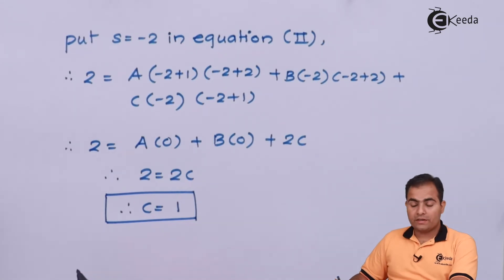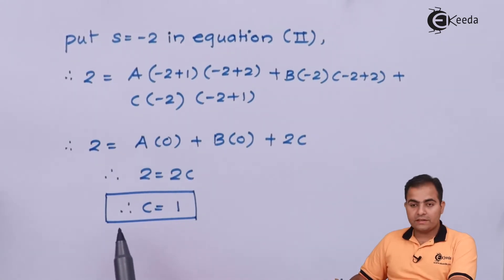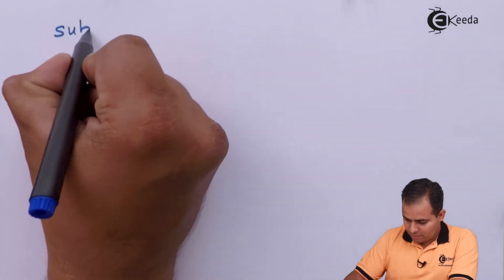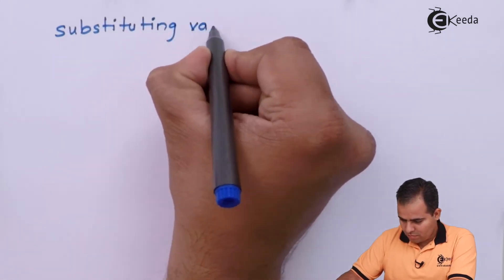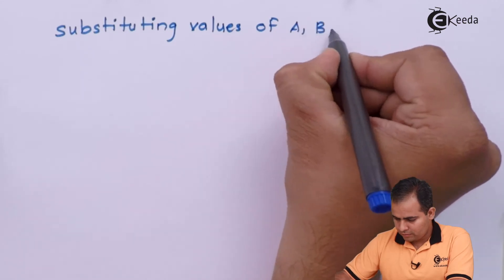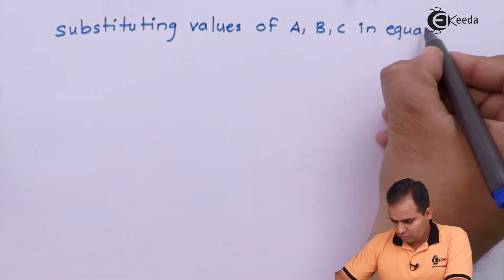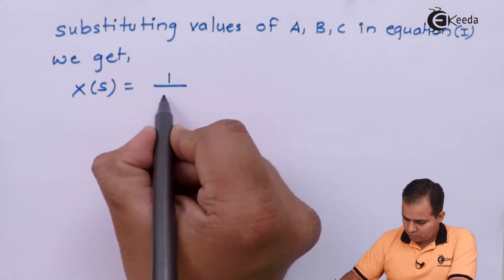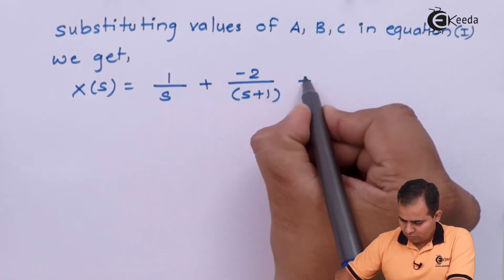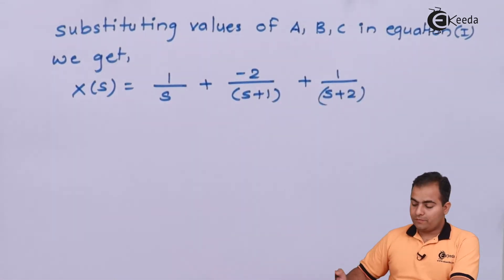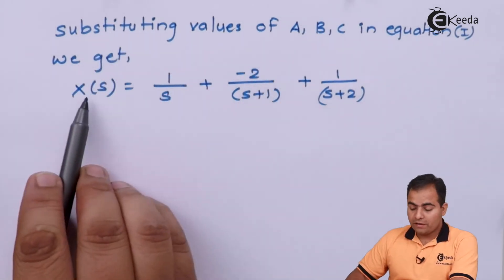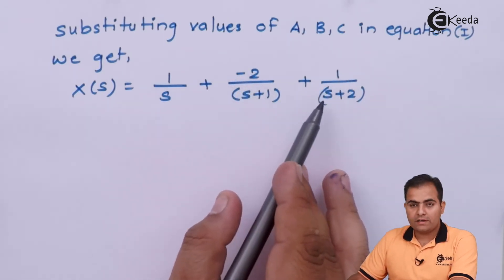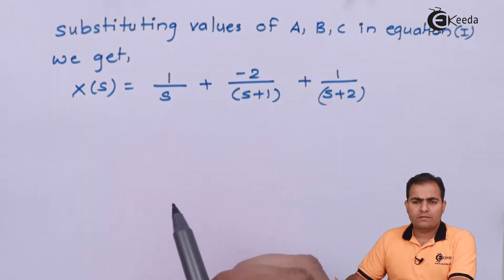Once we get the values of A, B, C, we substitute all values back in equation number 1. After substituting, we get X of S equal to 1/S minus 2/(S+1) plus 1/(S+2).